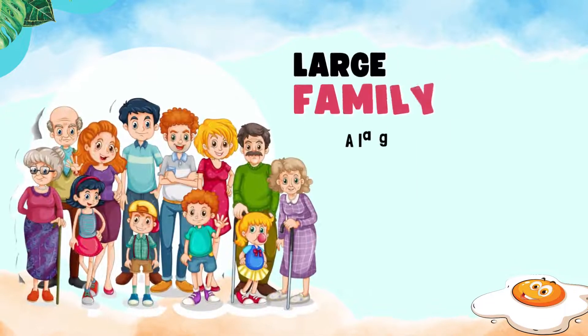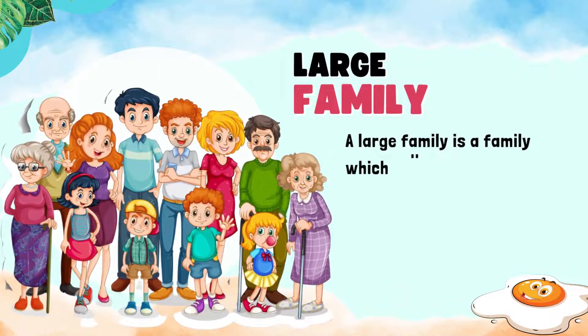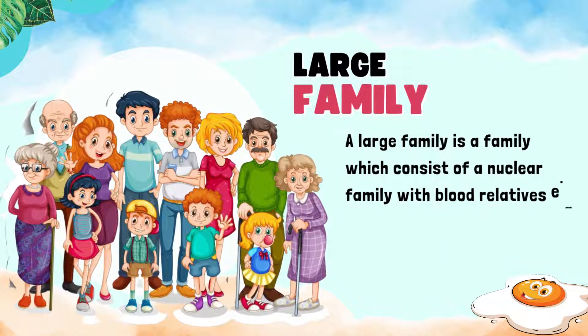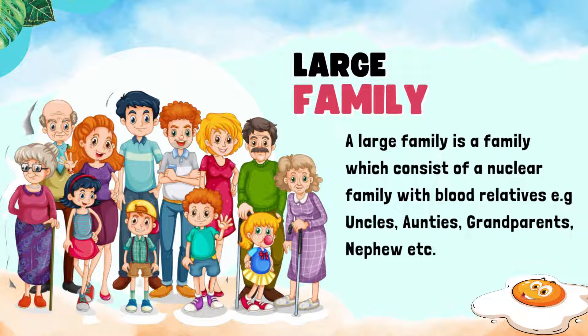Let's go over to the large family. A large family is a family which consists of a nuclear family with blood relatives. When we say blood relatives, we're talking about grandma, grandpa, uncles, aunties, nephews, nieces, cousins — all these are blood relatives, along with the nuclear family members of father, mother, and children.